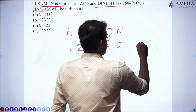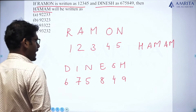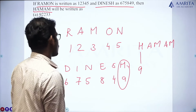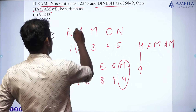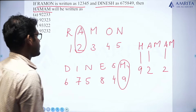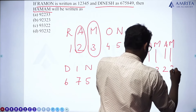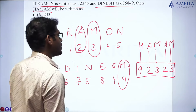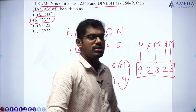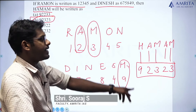We have to code Hama. First, find the code for H — it is 9. Then the code for A is 2. Here also the code for A is 2. Remains M — the code for M is 3. So the code for Hama will be 9, 2, 3, 2, 3. Option B — 9, 2, 3, 2, 3 is the correct answer. Simple question.